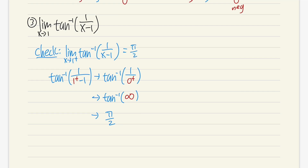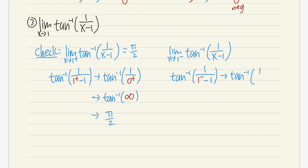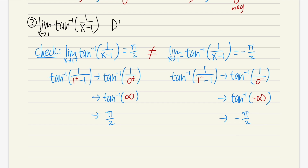So we get pi over 2. On the other hand, the limit as x approaching 1 minus of inverse tangent of 1 over x minus 1: we get arctan of 1 over 1 minus minus 1, which approaches arctan of 1 over 0 minus, giving us arctan of negative infinity, which is negative pi over 2. When we approach 1 from the left-hand side, we get negative pi over 2. These two limits are not equal. Therefore, the original limit does not exist.